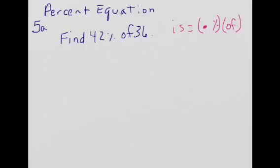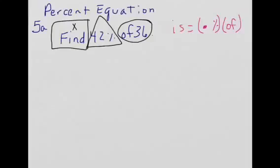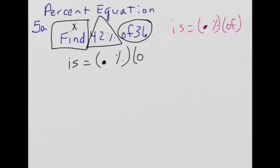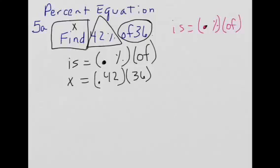Next: percent equation. My 42 is my percent, my total (of) is 36, and I'm looking for my part (is). Formula: is equals percent times of — remember to change percent to a decimal. So: x equals 0.42 times 36. Multiply, and x equals 15.12.